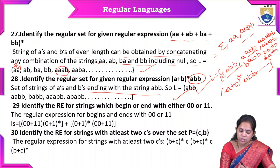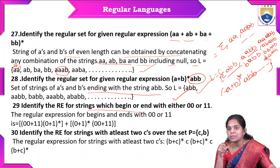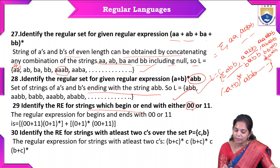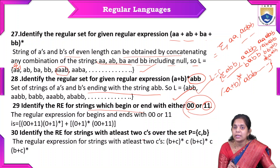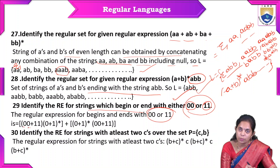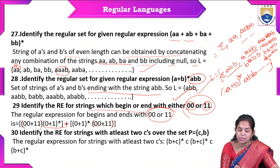Example: identify the regular expression for strings which begin or end with either 00 or 11. We have two values: 00 and 11. Starting with either of these two, with any combination of 0 and 1 in between, and ending with either of these two. So we write: (00+11)(0+1)*(00+11).